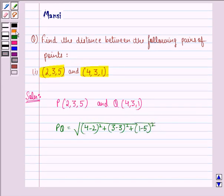And this is equal to square root of, now 4 minus 2 is 2. So, 2 square plus 3 minus 3 is 0. So, 0 square is 0 plus 1 minus 5 is minus 4. So, minus 4 the whole square.